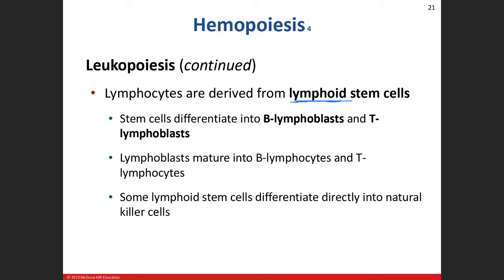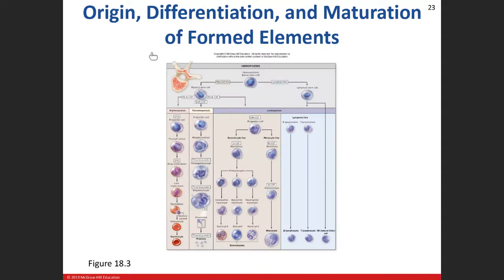From the lymphoid stem cell line, we get our B cells and T cells. The stem cell differentiates into a B lymphoblast or a T lymphoblast, and then they mature into B and T lymphocytes. Some of these lymphoid stem cells will directly turn into our NK, or natural killer, cells.